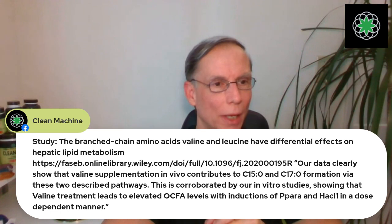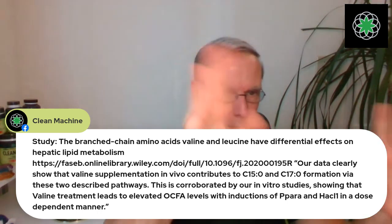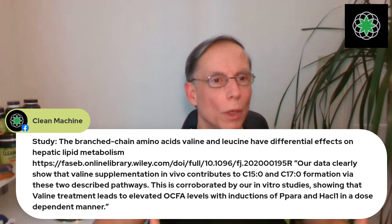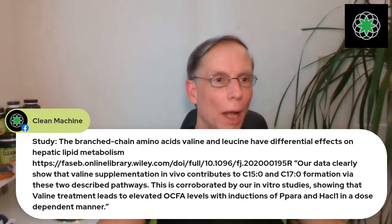This is corroborated by in vitro studies showing valine treatment leads to elevated odd-chain fatty acid levels in a dose-dependent manner. The more branched-chain amino acids you include in your diet — through supplementation or high-protein foods — the more C15 and C17 you create. You've got multiple pathways: a good fiber diet, branched-chain amino acids, and even our body's own propionate production. Three different pathways mean our body can create all the odd-chain fatty acids it needs. C15 is non-essential — you do not need to take a supplement.